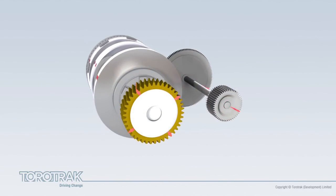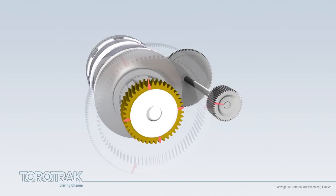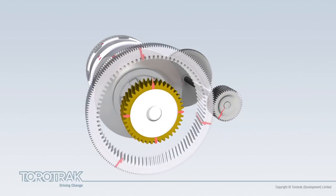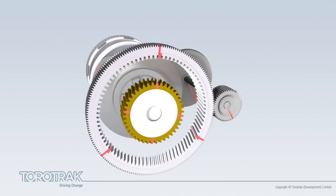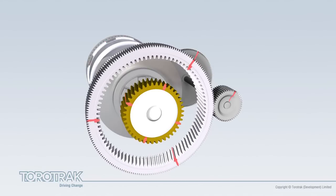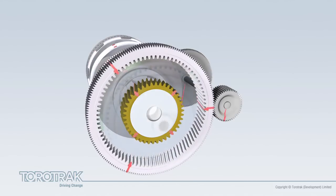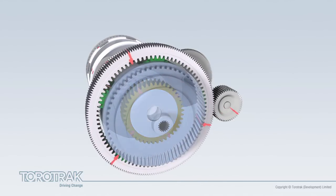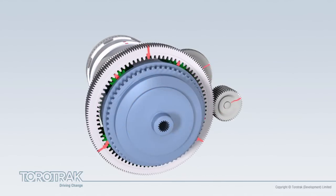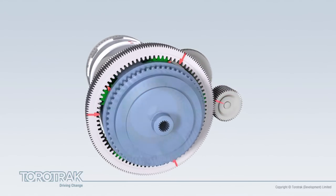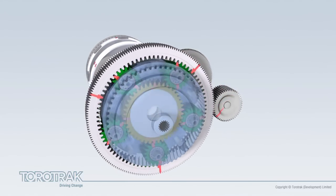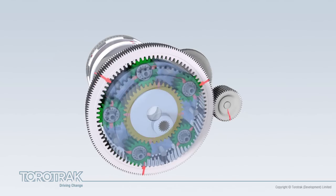An epicyclic gear train is formed from three connected elements. The sun, or centre gear, is driven by the variator input. The annulus, or ring gear, is driven by the variator output via the lay shaft. The planet gear and carrier assembly forms the output of the transmission.